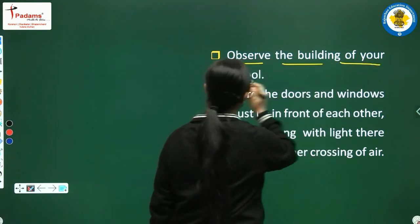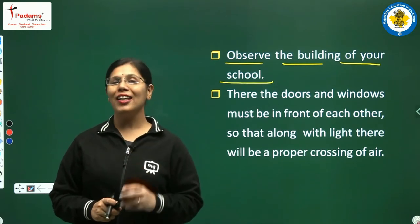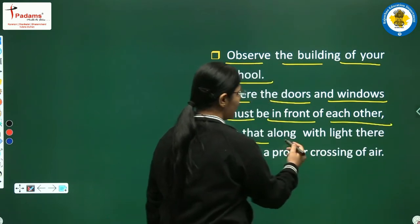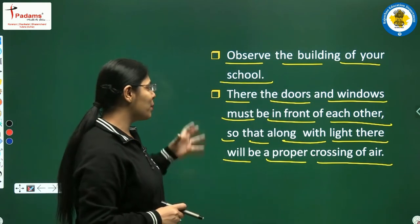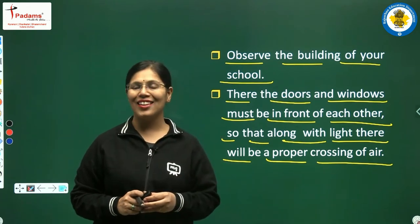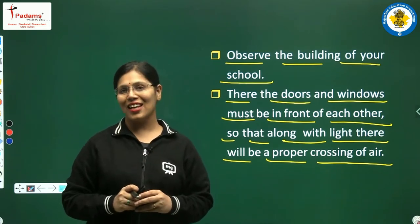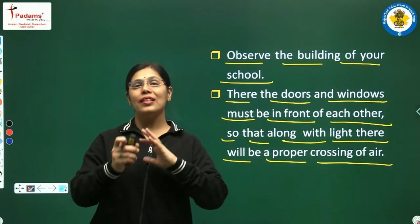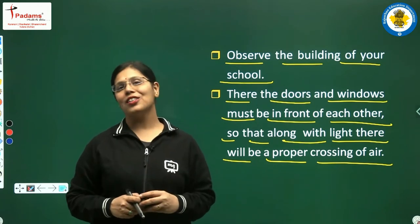Observe the building of your school. Aapko apne vidyalay ka jo bhavan hai, usko dhyan se dekhna hai. The doors and windows must be in front of each other so that, along with light, there will be proper crossing of air. Jo darwaze hain, jo khirkiyan hain, wo ek doosre ke aamne saamne hain, aur isse vayu proper cross karti hai. Aisi building mein vayu aur prakash ki koi samasya nahi hoti.